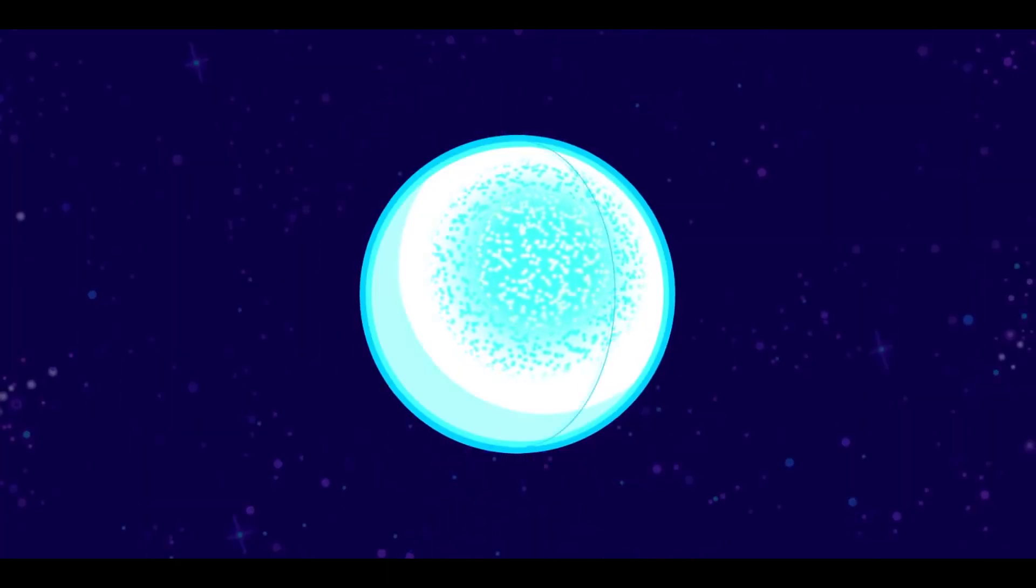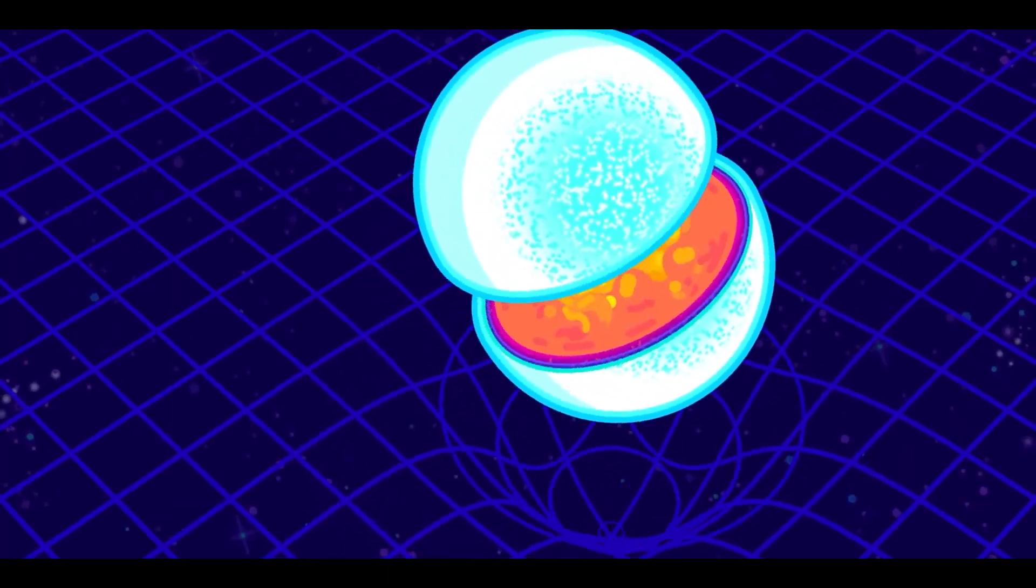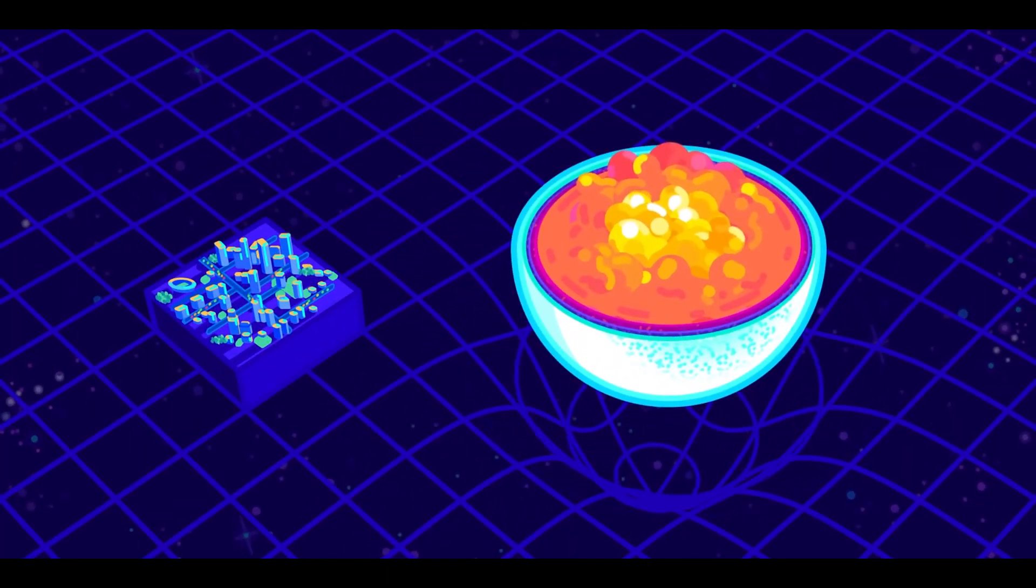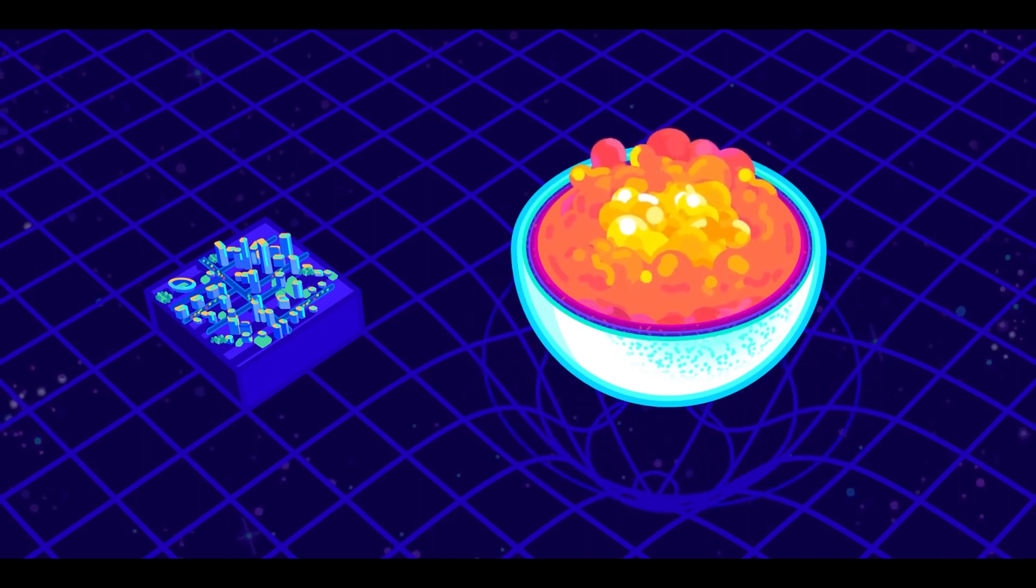Despite slowing down so gradually, pulsars make excellent clocks. It is possible to test theories about gravity using this accuracy since pulsars also have strong gravitational fields.